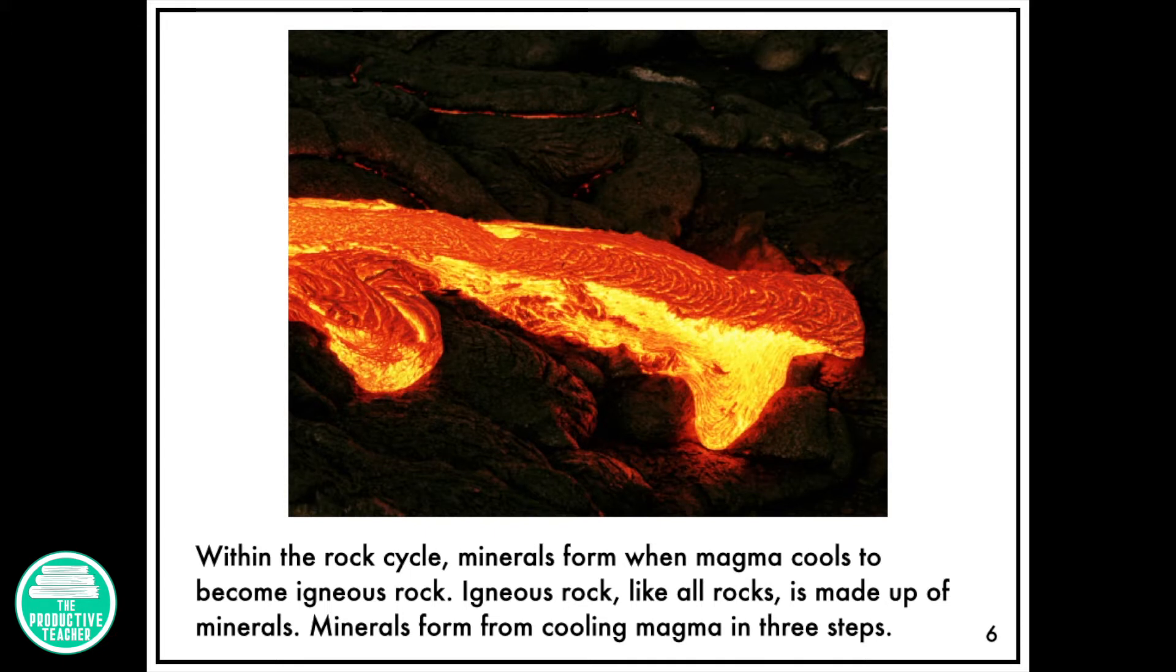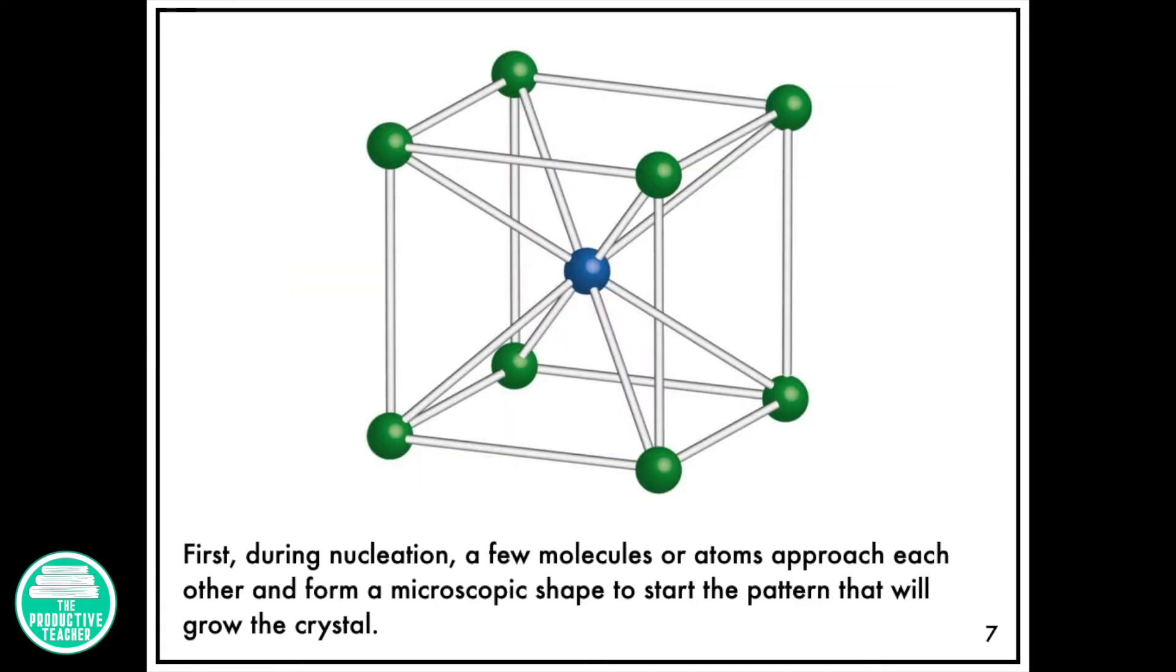Minerals form from cooling magma in three steps. First, during nucleation, a few molecules or atoms approach each other and form a microscopic shape to start the pattern that will grow the crystal.